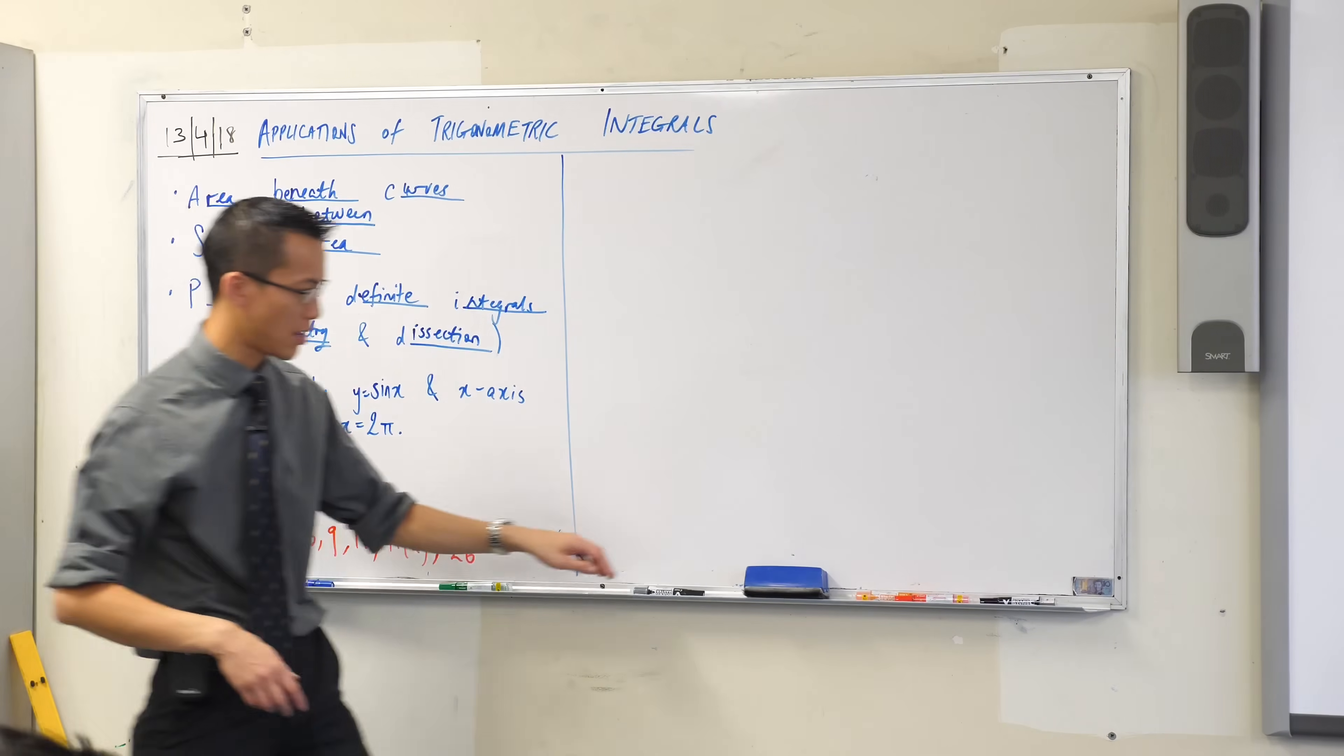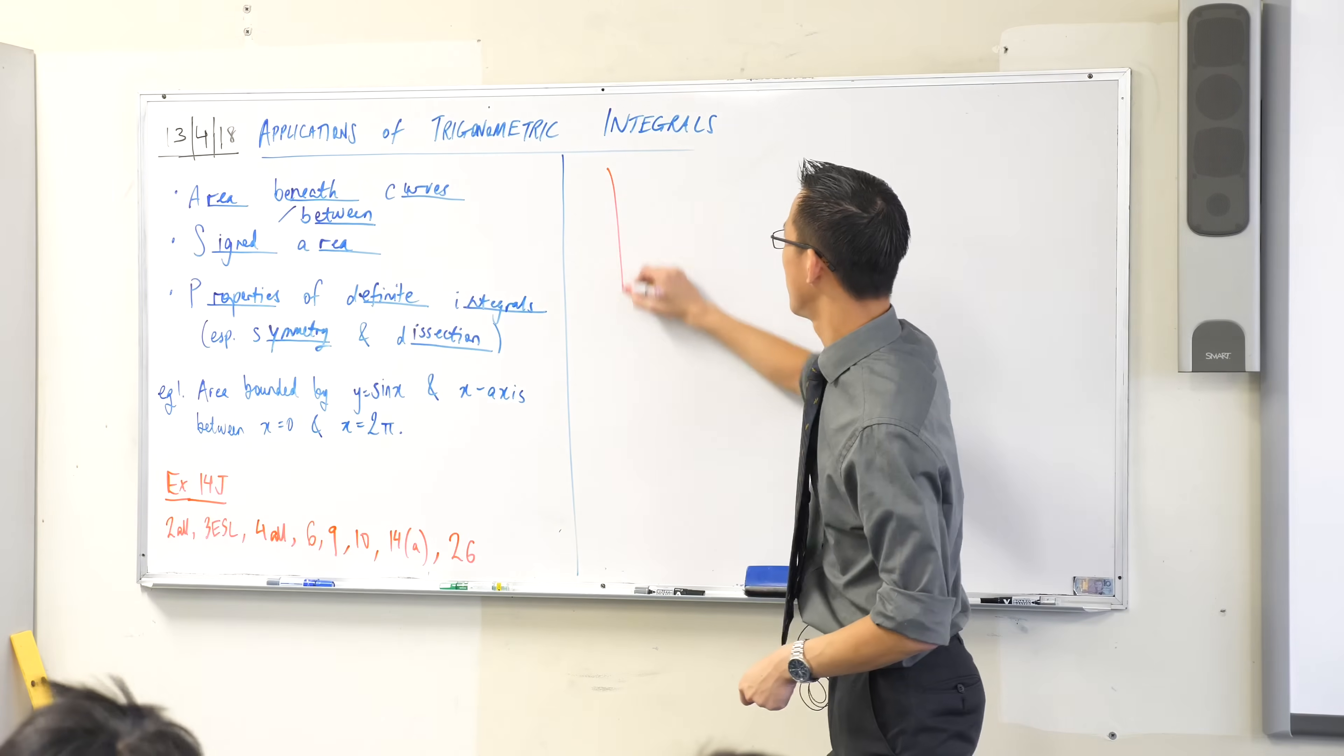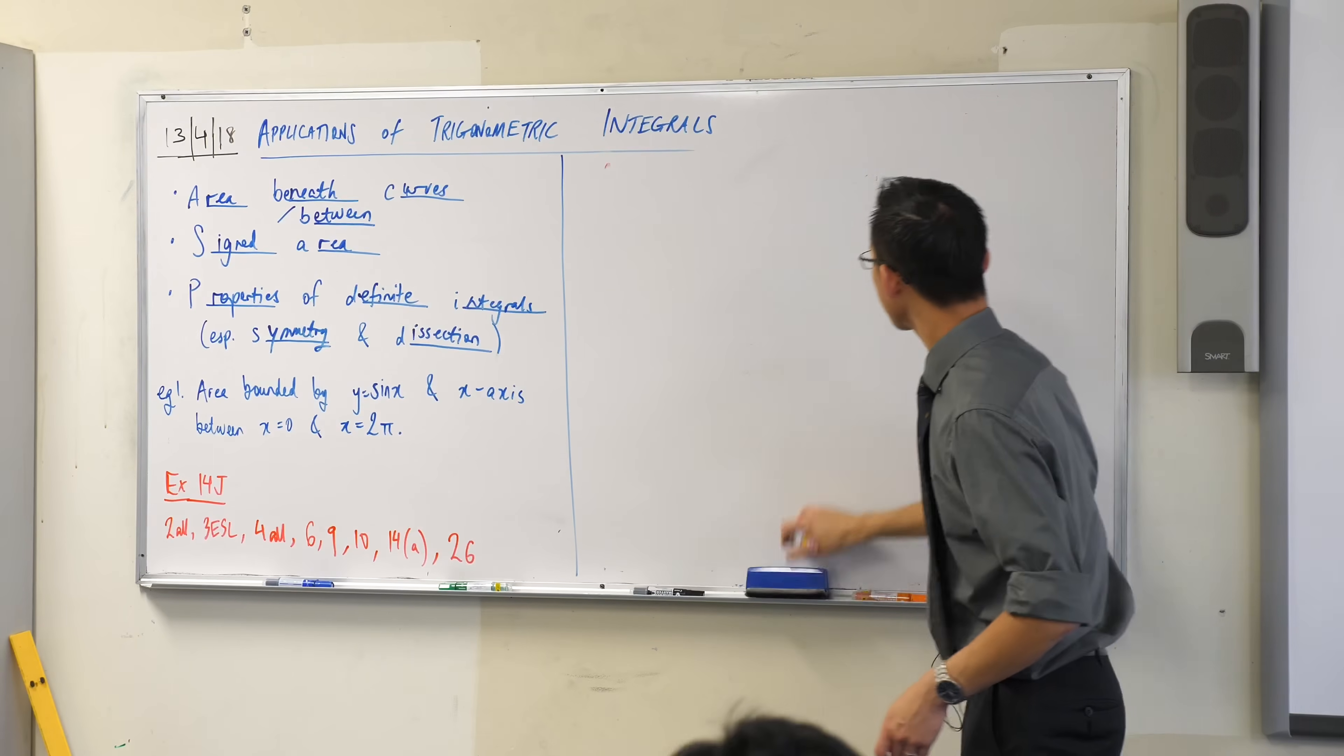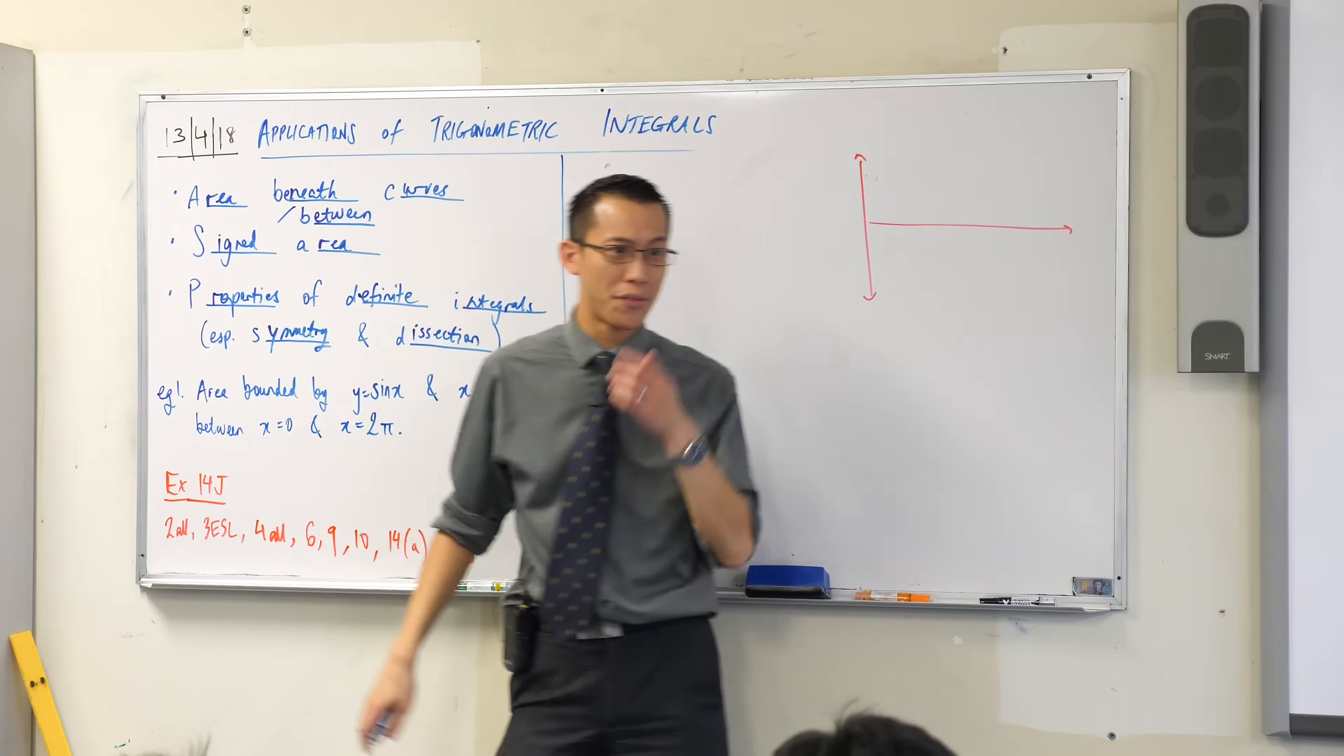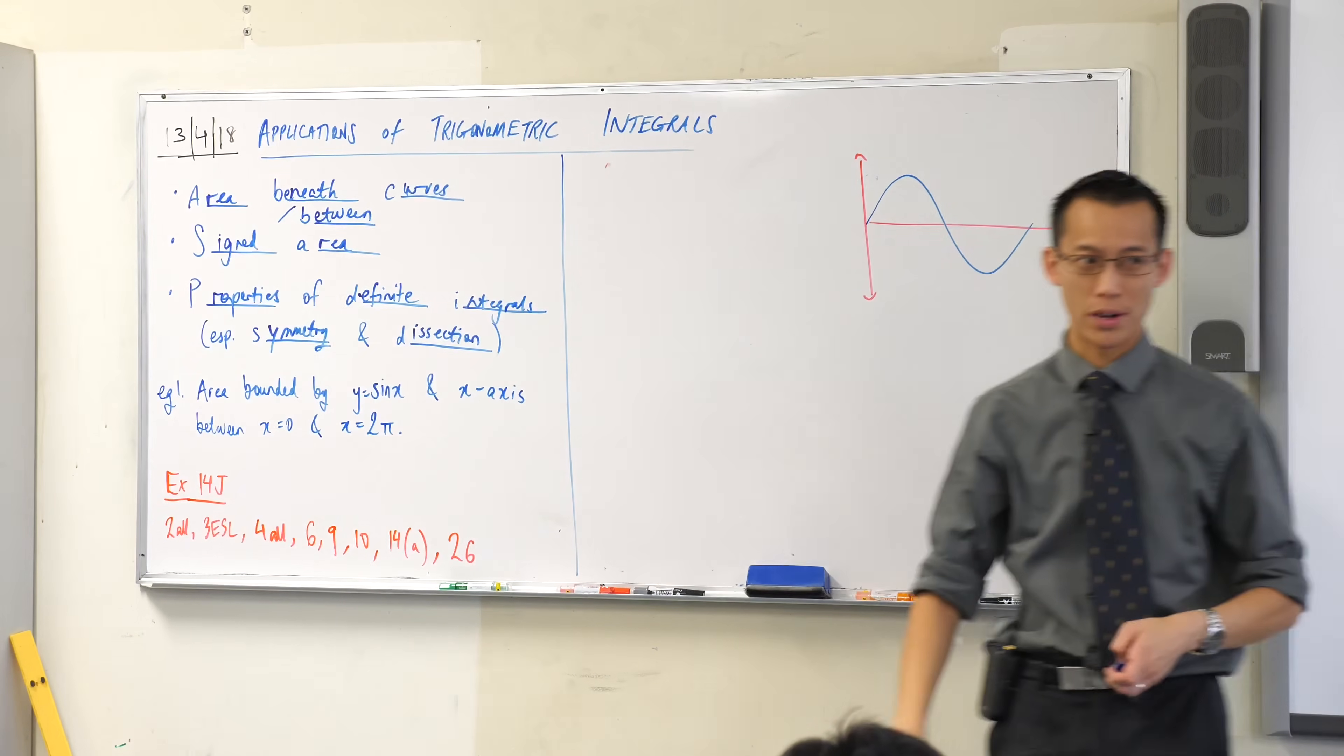So would you please draw a small set of axes for me? It's 0 to 2π, so we only need the positive side. Actually, I'm going to draw it over here. And this is just standard old vanilla y equals sine x, so that's roughly what it looks like.